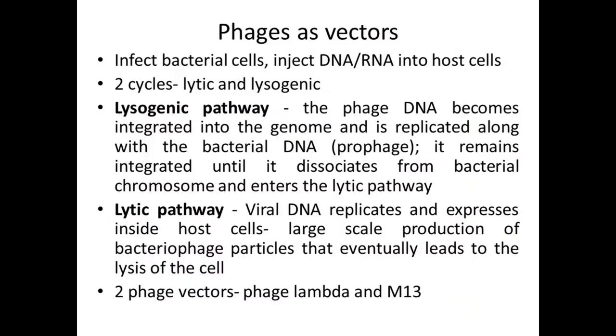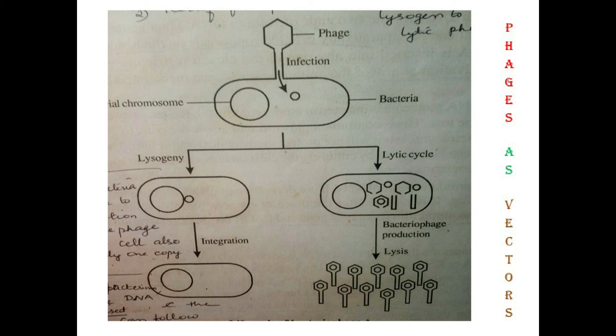In the lytic pathway, the prophage dissociates from the bacterial genome and starts replicating inside the host cell. It begins expressing inside the host cell and produces large numbers of bacteriophage particles, which fill up the host bacterial cell. Finally, the host cell gets lysed and the bacteriophage particles are released to infect new host cells.